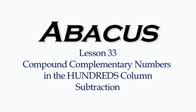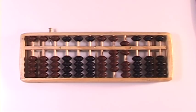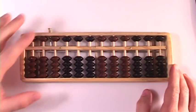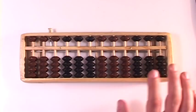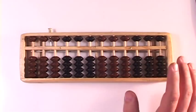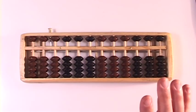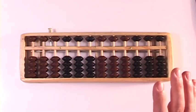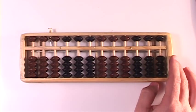Lesson 33, Subtraction Using Compound Complementary Numbers in the 100's Column. This is going to be the last lesson of the Abacus series. After this, you will have learned everything that you need to know to add or subtract any number on the Abacus. This lesson is not even really going to teach you anything new. You already know the principle. We're just keeping it in sequence with what we've done in the past.